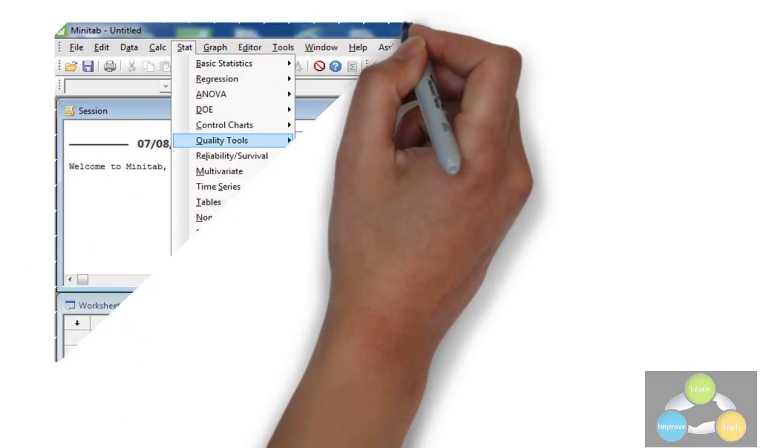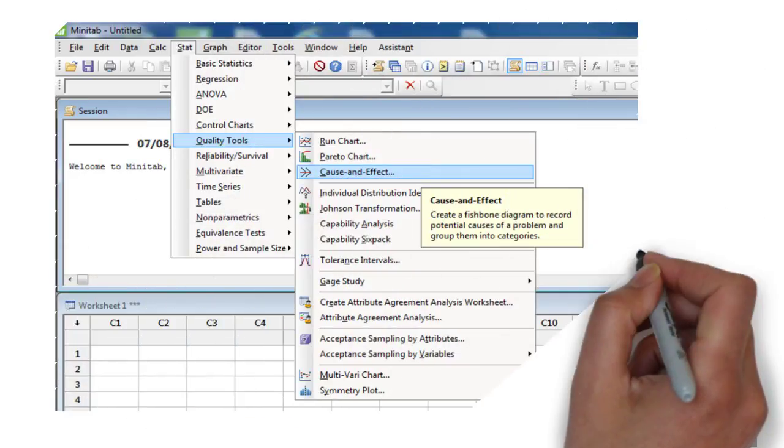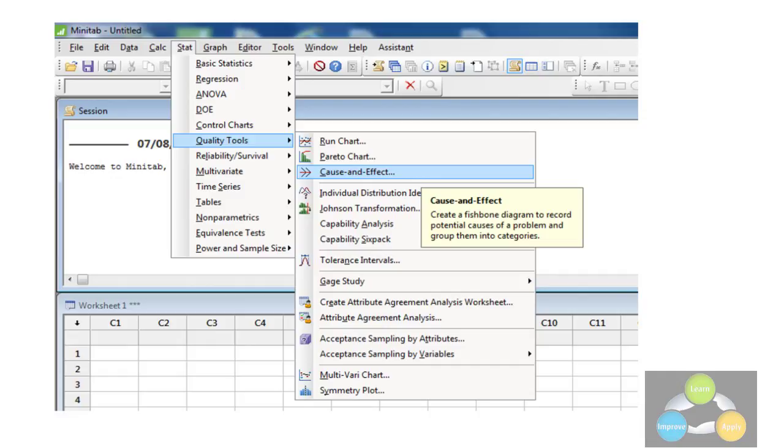Once we have entered the data in the Minitab worksheet to draw the fishbone diagram, go to Stat, Quality Tools, and select the Cause and Effect option.